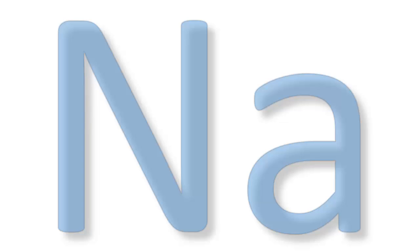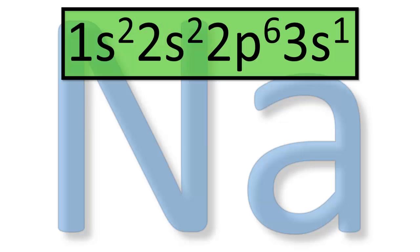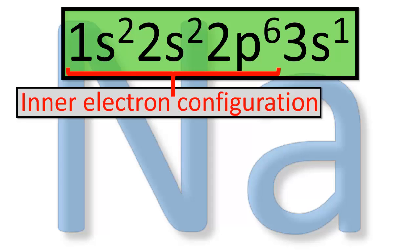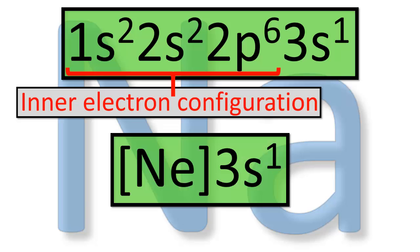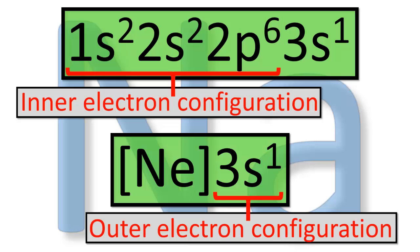For instance, the electron configuration of sodium is 1s² 2s² 2p⁶ 3s¹. The inner electron configuration is 1s² 2s² 2p⁶, which is that of neon, the previous noble gas. Thus the abbreviated electron configuration of sodium is [Ne] followed by 3s¹. The 3s¹ portion is called the outer electron configuration.